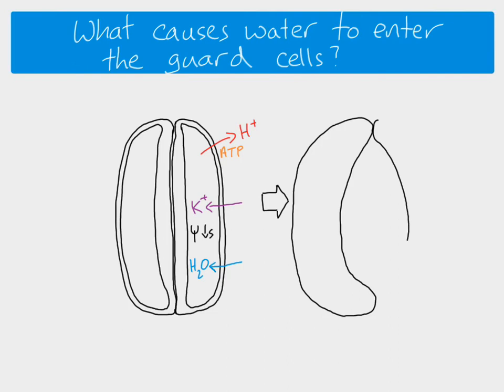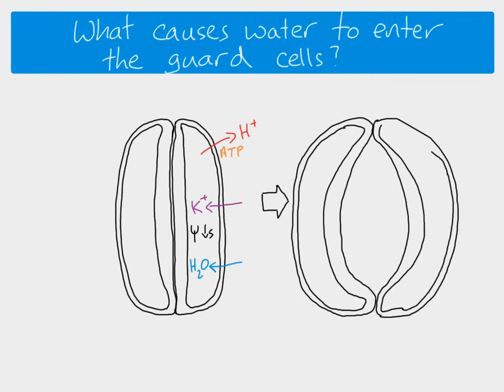If you want to go the other way — once the guard cells have opened the stomata — they'll stay like this as long as they stay full of water, which means as long as that water potential gradient is there. So if we want to close the stomata, we just have to shut off the hydrogen ion pump. If you stop the hydrogen ion pump then the potassium ion channels will close, potassium will not move in, the water potential is going to increase, water will leave, and that's how plants control the opening and closing of their stomata.